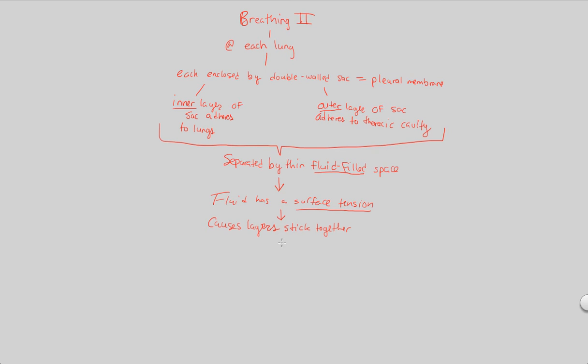The overall culminating function of this pleural membrane is the following. The outer layer that's contacting the thoracic cavity plus the inner layer contacting the lungs directly are going to all change volume together. That's the key here.